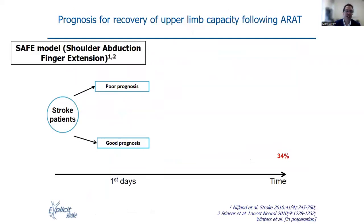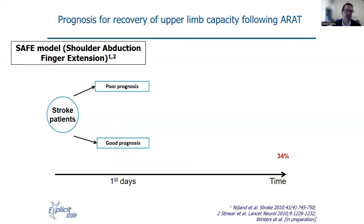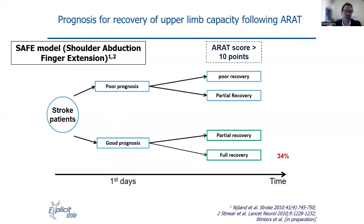This generated an observation that the prognosis for upper extremity could be determined by looking at a person's shoulder abduction and finger extension within the first days following the stroke. If a person could do both of these activities — shoulder abduction and finger extension — then they would have a good prognosis. This represented 34% of the people. Whereas if they did not have these, they would be assigned to a poor prognosis initially.